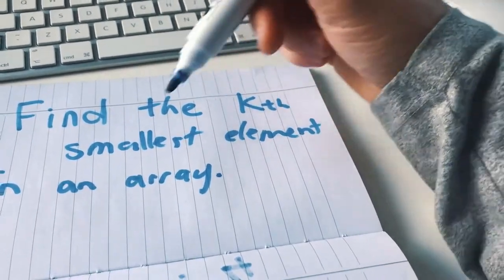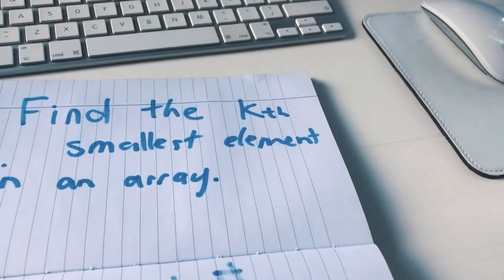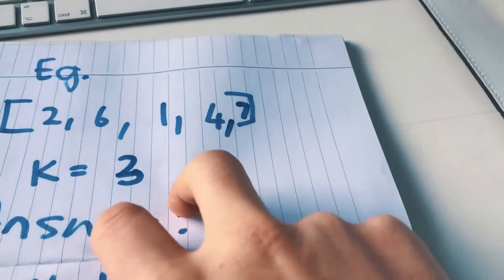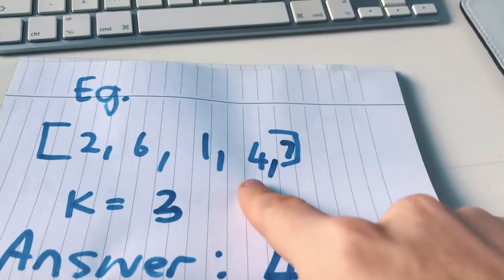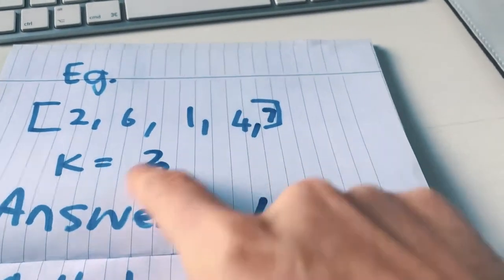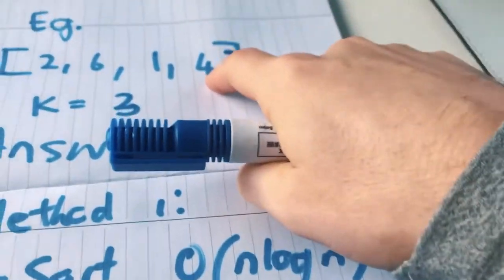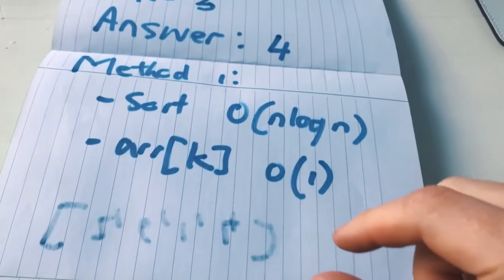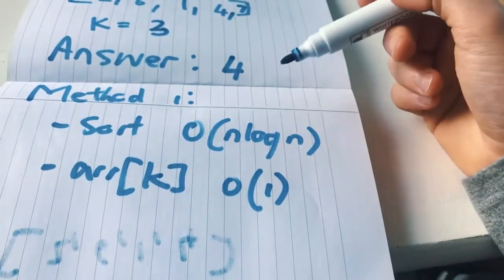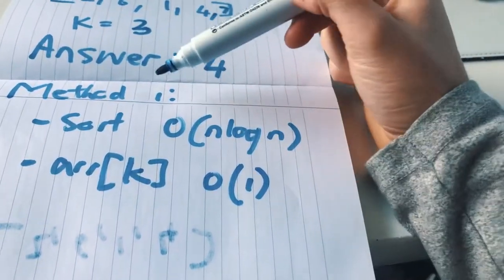So the question is find the kth smallest element in an array. You can see here given an array 2, 6, 1, 4, 7, and k is 3, so the third smallest element would be 4, right? The first way you can do this, which is quite simple and easy to understand, you could sort the array with quick sort or merge sort.